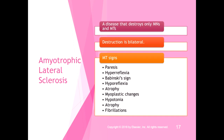ALS — also known as Lou Gehrig's disease, or amyotrophic lateral sclerosis — destroys only motor neurons and motor tracts, and the destruction is bilateral, so you get both motor tract signs and motor neuron signs. With ALS you see paresis, hyperreflexia, positive Babinski's, hyporeflexia, muscle atrophy, myoplastic changes, hypotonia, atrophy, and fibrillations. It has an unpredictable progression and is a very challenging disease.